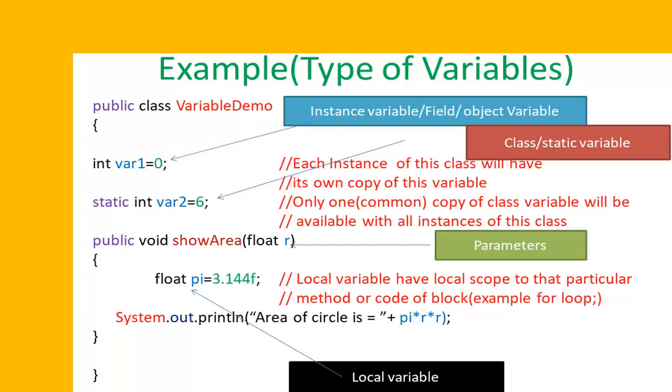The third type of variables are known as local variables. For example, in our class VariableDemo we have a variable named pi in method showArea. Now pi has local scope only to this method showArea.